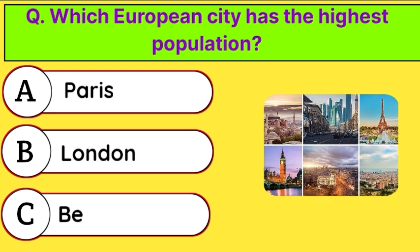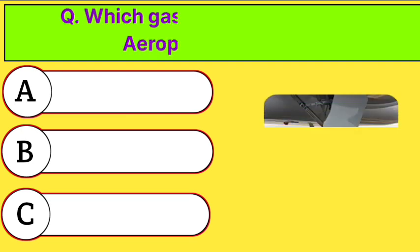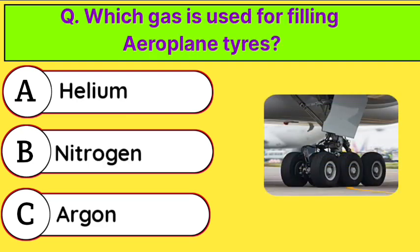Which European city has the highest population? Correct answer is option B. London. Which gas is used for filling airplane tires? Correct answer is option B. Nitrogen.